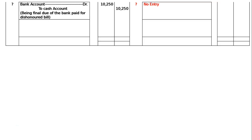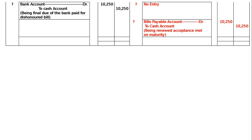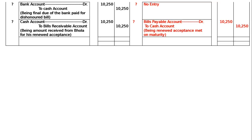On the due date, the renewed bill is met at maturity. In the books of Bhola: Bills Payable account debited to Cash account Rs.10,250, being renewed acceptance met at maturity. This renewed acceptance was kept with Ammar till the end, hence Ammar will be receiving the money — Cash account debited to Bills Receivable account Rs.10,250, being amount received from Bhola for his renewed acceptance.